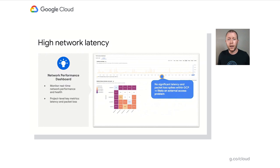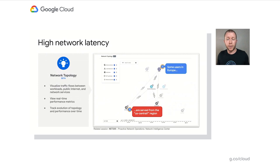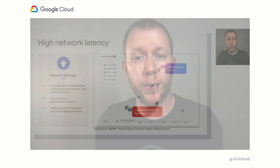He looks at the performance dashboard and quickly confirms that everything within GCP looks good. So he opens up the network topology view to investigate if there are any problems with the external access that might be contributing to the high latency. From this view, he can immediately see that something is wrong — their users in Europe are for some reason being served from the non-optimal US Central 1 region. He gives a quick call to his friend on the networking team, and they quickly realize this must have been caused by the oversubscribed pool of compute resources, which resulted in the global load balancer automatically rerouting traffic to the US. They remediate this issue quickly by adding more resources in the Europe region and reconfiguring the load balancer.